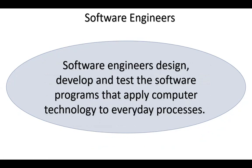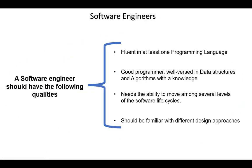develop, and test the software programs that apply computer technology to everyday processes. A software engineer should have at least the following qualities: fluent in at least one programming language, a good programmer will be versed in data structures and algorithms, needs the ability to move among several levels of the software life cycle, and as an engineer, he should be familiar with different design approaches.